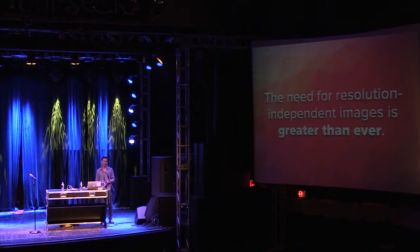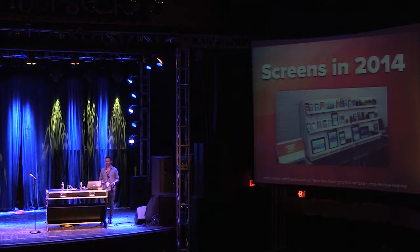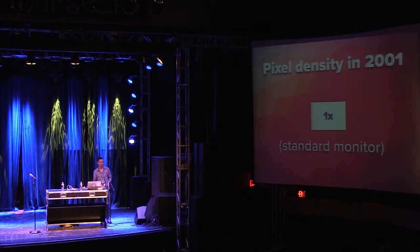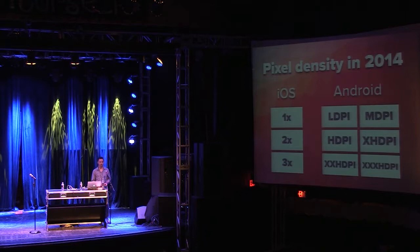Because now we have all sorts of different types of screens and resolutions. Back in 2001, you basically just had 800 by 600 or 1024 by 768. Now we have mobile device labs with 30-plus different screens of varying sizes and densities. Pixel density is an even bigger issue. Looking at just iOS, we now have three densities thanks to the iPhone 6 Plus, which actually renders at 3x — more than a retina screen. And on Android, you have a whole host of different densities.